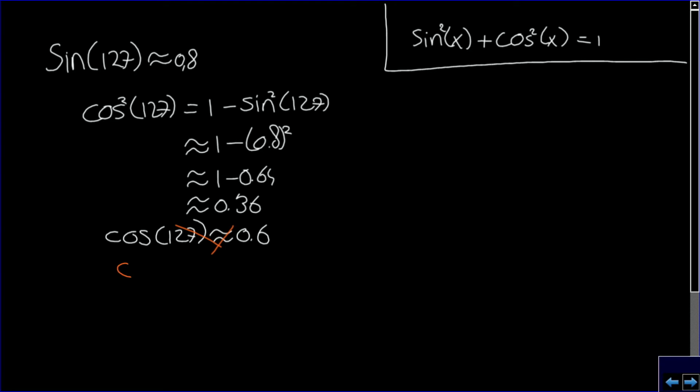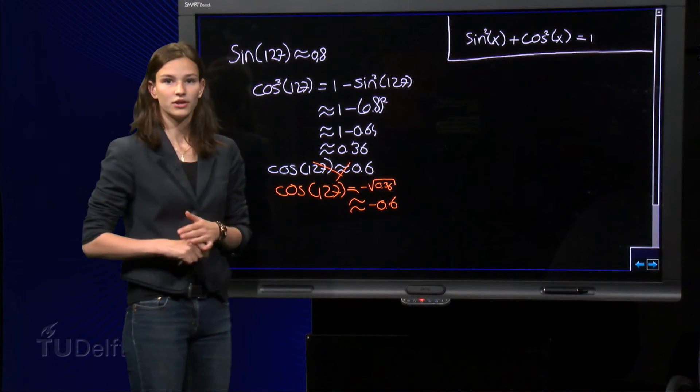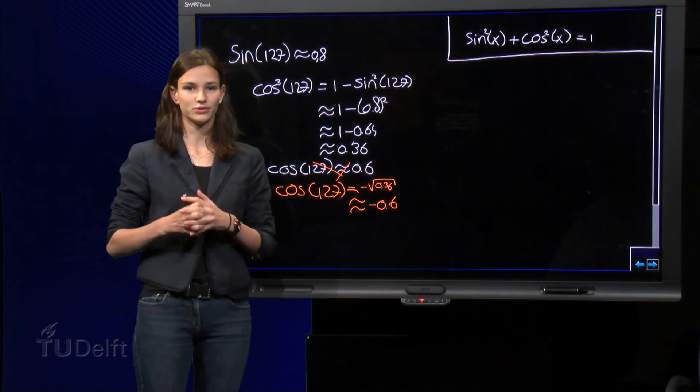So, cosine of 127 equals minus the square root of 0.36 and this is minus 0.6. So this must be the correct value of cosine of 127.